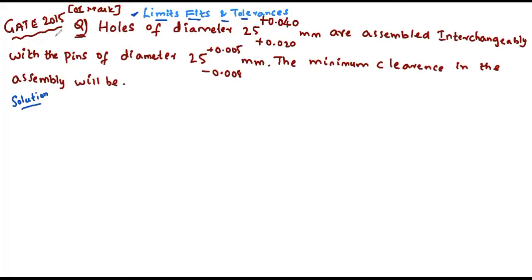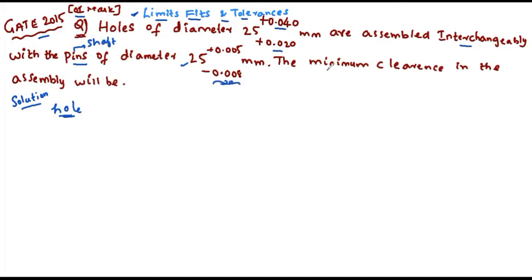Coming to the first question, this is the question asked in GATE 2015 for one mark. Holes of diameter 25 mm as the basic size are given, with upper deviation 0.040 mm and lower deviation 0.020 mm, assembled interchangeably with pins of basic size 25 mm, upper deviation 0.005 mm, and lower deviation 0.008 mm. We need to find the minimum clearance in the assembly.